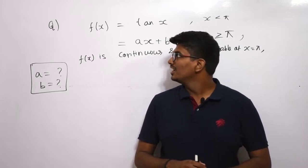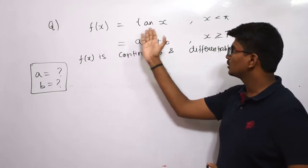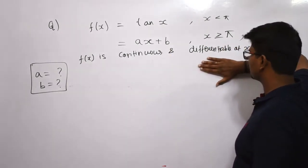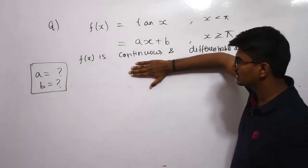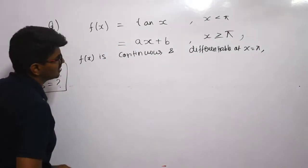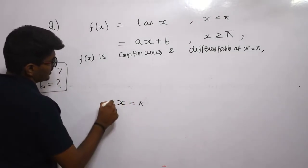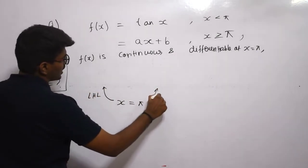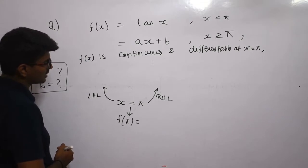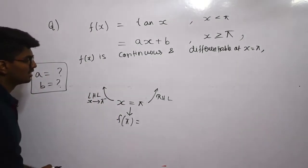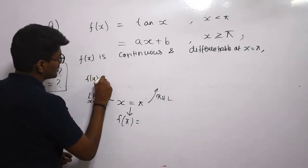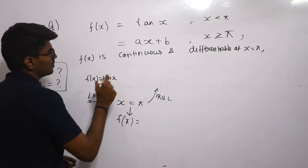We have another problem in differentiability and continuity. f(x) = tan x if x < π, and f(x) = ax + b if x ≥ π. f(x) is continuous and differentiable at x = π, and we need to find a and b. First, using continuity: the left-hand limit as x → π⁻ gives f(x) = tan x, so substituting π gives tan π.